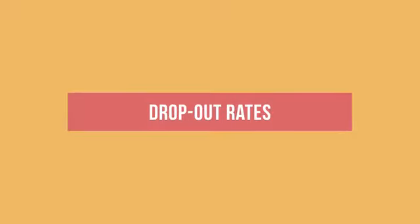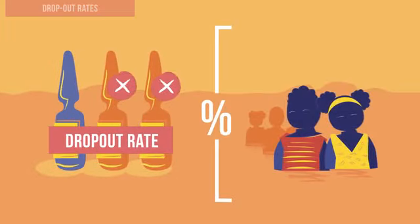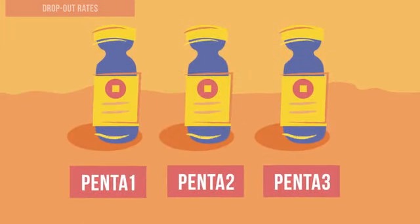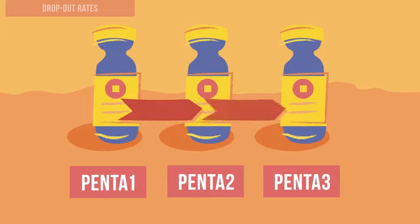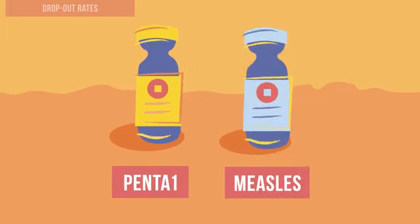The dropout rate shows the percentage of infants who have received one dose of a specific vaccine but who did not receive all doses in a series. For example, many countries measure the dropout rate by tracking whether infants who received the first dose of pentavalent vaccine also received the third dose, or countries may track the dropout rate between the first dose of pentavalent vaccine and a measles-containing vaccine.